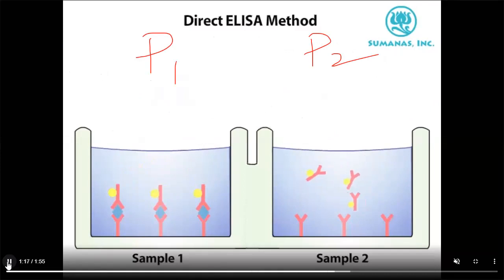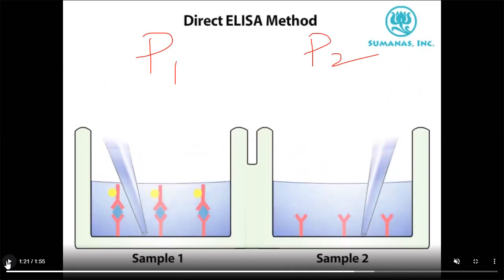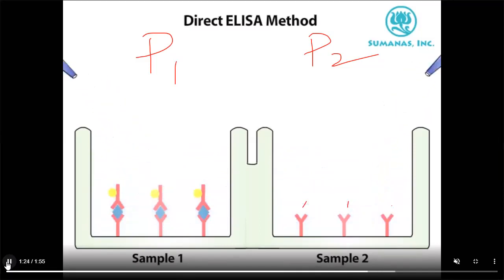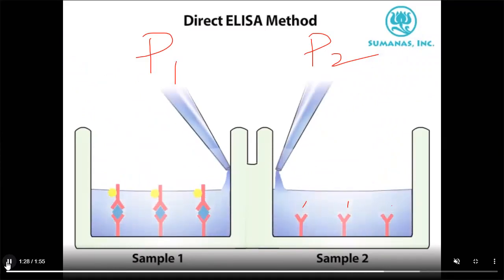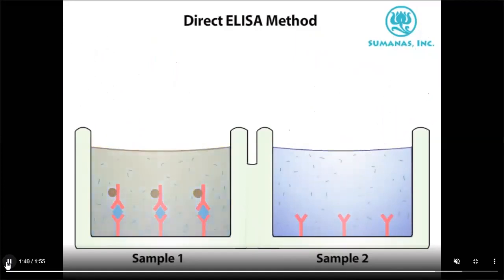In the first (positive) case, the enzyme-linked antibody goes and binds with the antigen on the other side. In the second case, the enzyme-linked antibody cannot bind because there is no antigen. Free fluid is absorbed in both cases. Now we add the substrate — which binds with that particular enzyme.